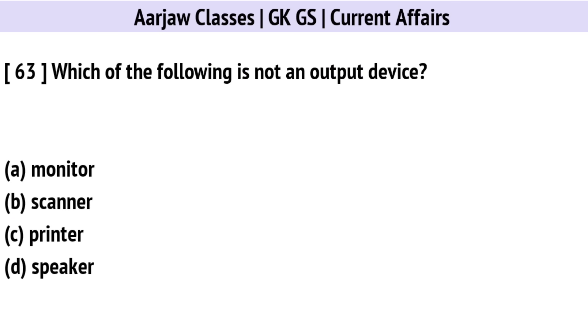Which of the following is not an output device? The correct option is B: Scanner.